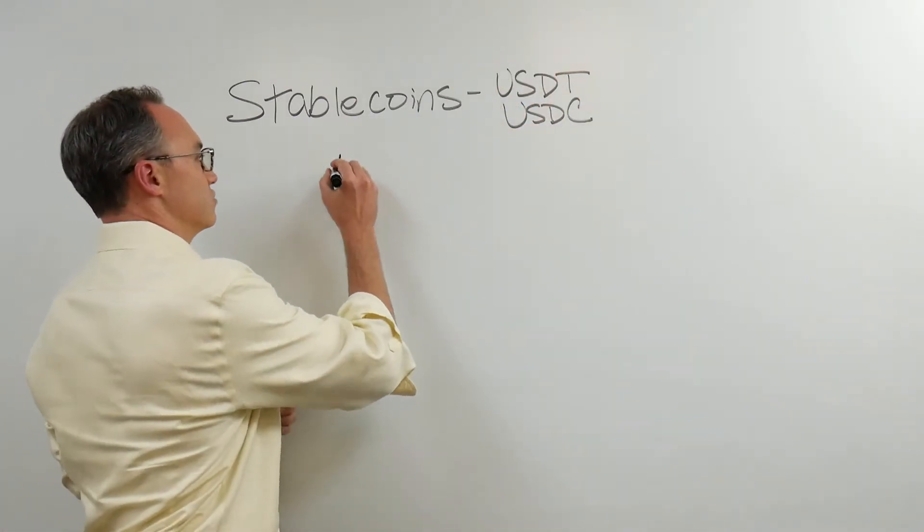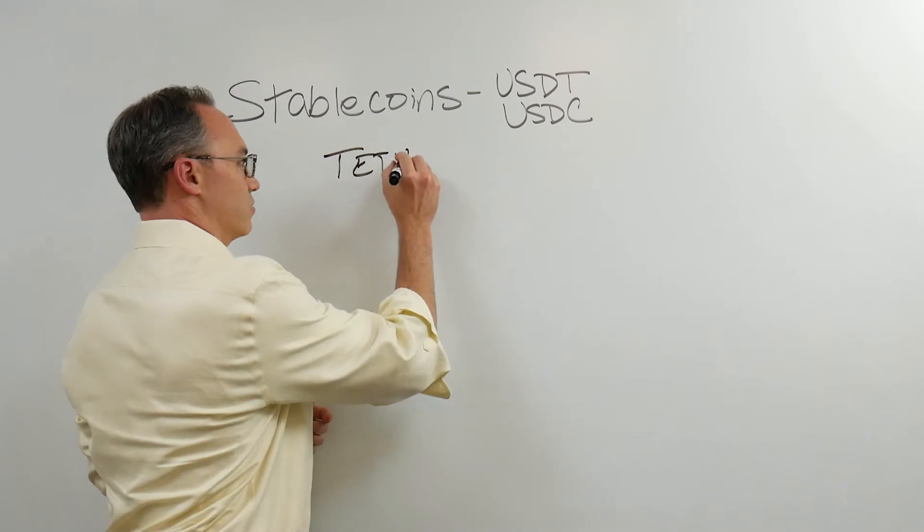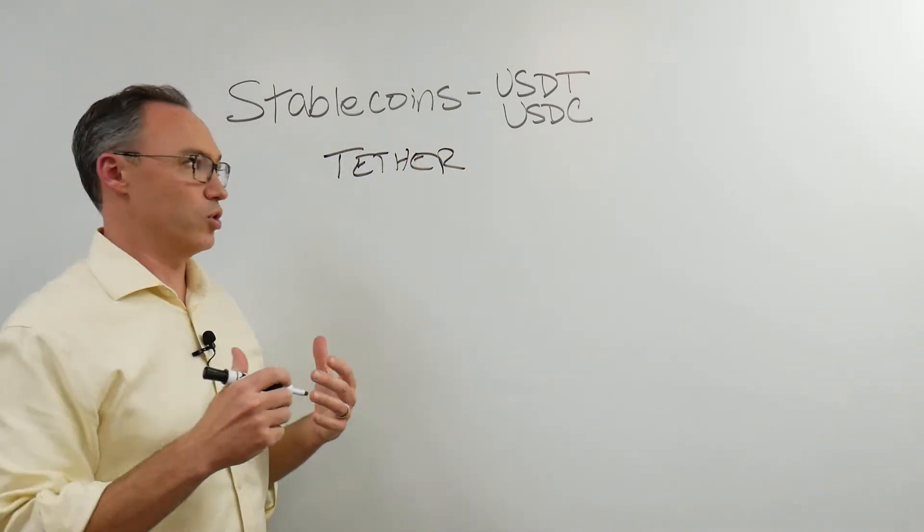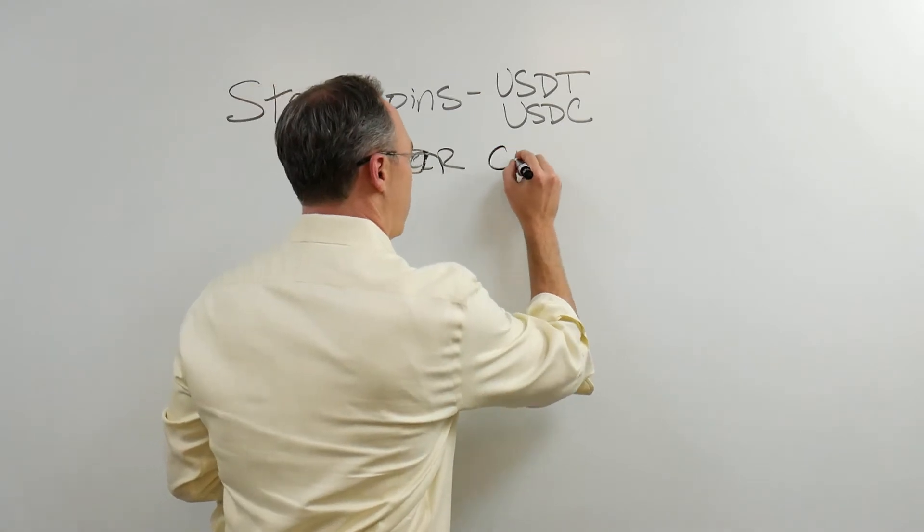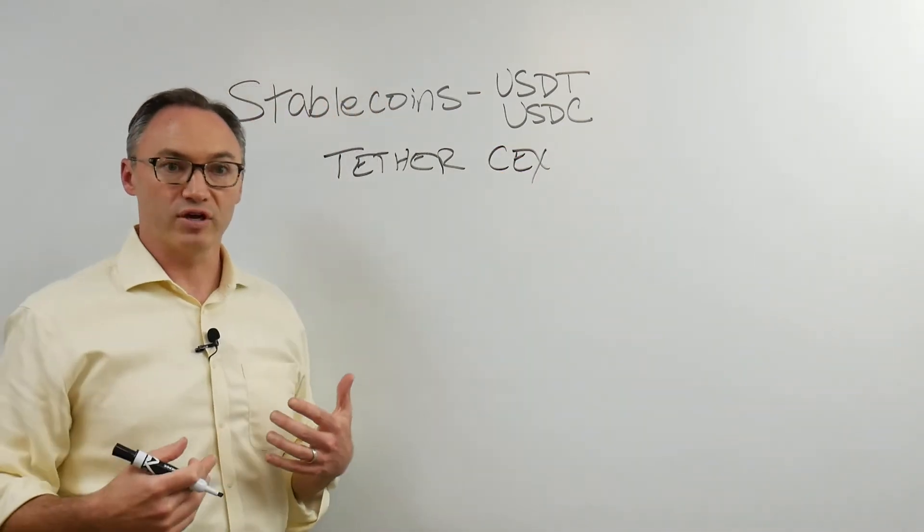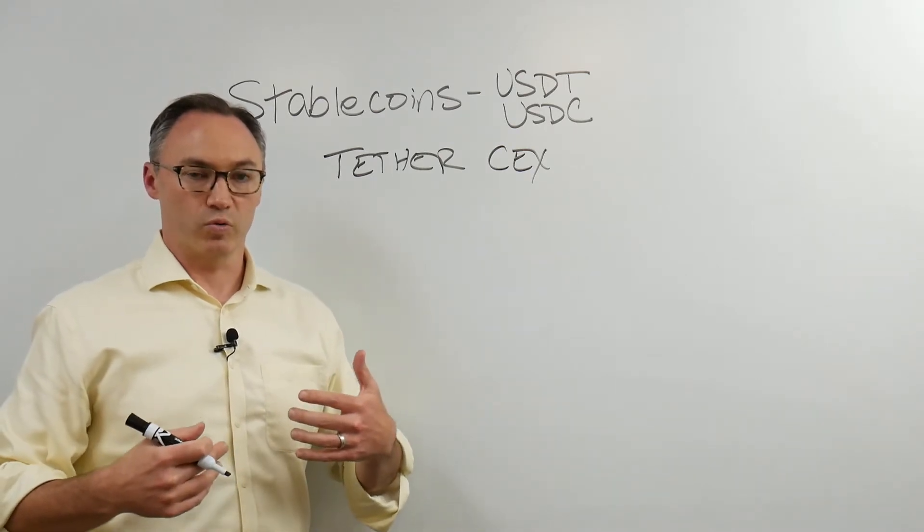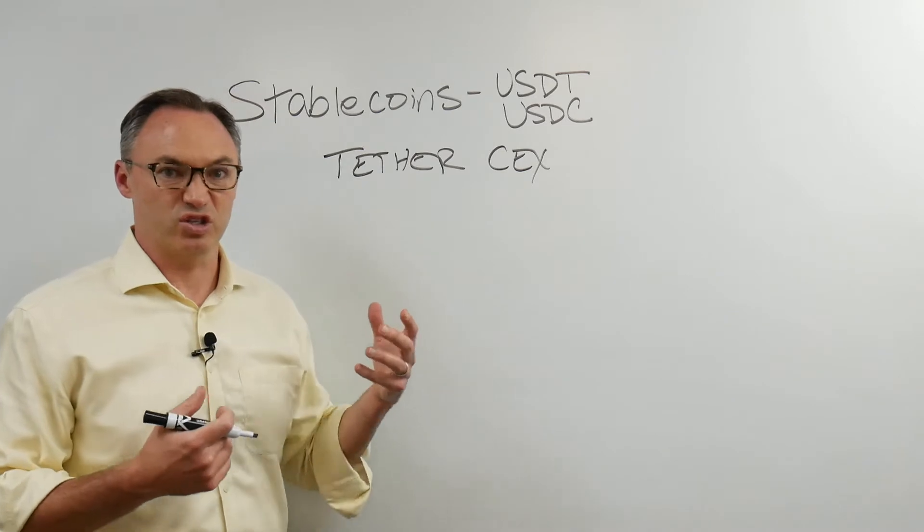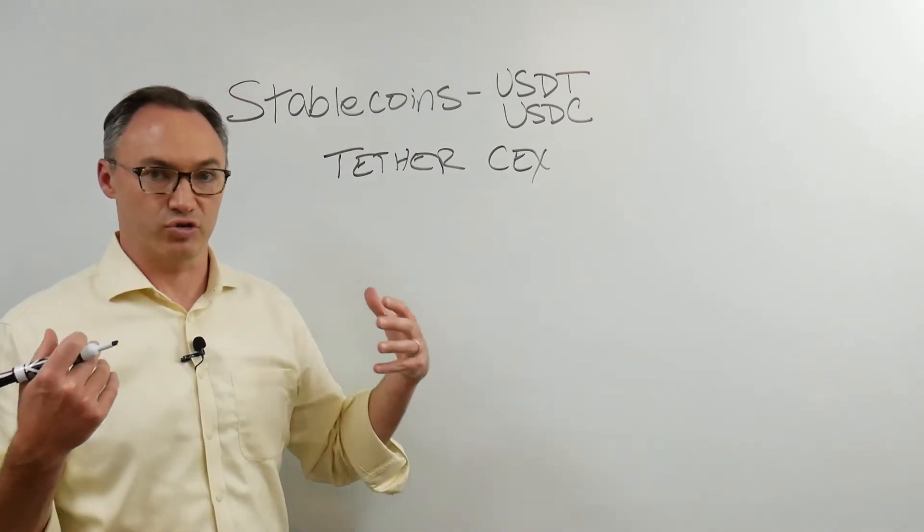So USDT is more commonly known as Tether. And Tether really came about when you started to have all this trading on these centralized exchanges, all the exchanges where people would go in, use Bitcoin, get into these exchanges and then trade Bitcoin against other cryptocurrencies.